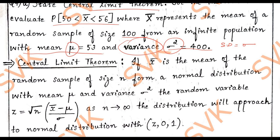...the distribution will approach the normal distribution with z(0,1). The value of z will reach 0 and 1 as n tends to infinity. This is the statement of central limit theorem. Moving on to the problem part.